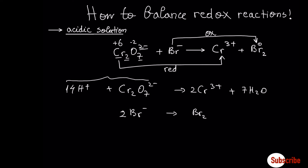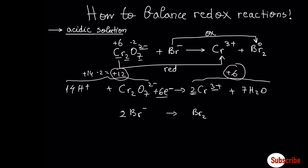Now let's move to the charges. Here we have plus 14 minus 2, equal to plus 12. Here we have 2 multiplied by plus 3, which is plus 6. On the left side we need 6 electrons — electrons are negatively charged, so adding them gives us plus 12 minus 6, which decreases the charge to plus 6, matching the other side. For the second half reaction, going from minus 2 to 0, we add 2 electrons.